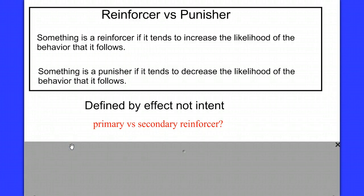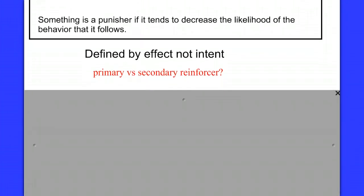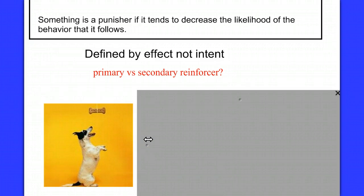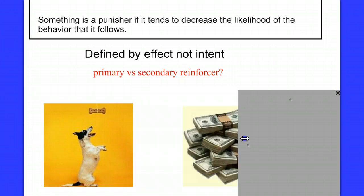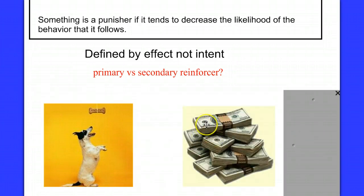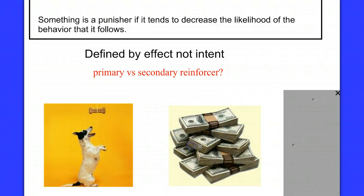A primary reinforcer is a reinforcer whose value is inherently understood — you don't need to teach it. Food is a classic example of a primary reinforcer; it has value. A secondary reinforcer is something whose value has to be learned. Money, for example, is just paper or cloth with printing on it. The only reason it has value is because you've learned you can use it to purchase the things you really want — the primary reinforcers. So tokens or money can be used as secondary reinforcers whose value is learned.